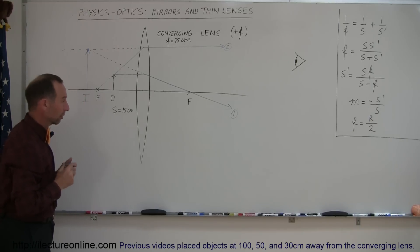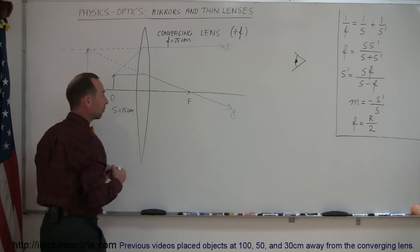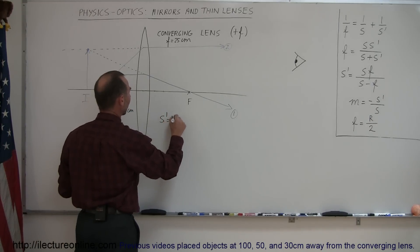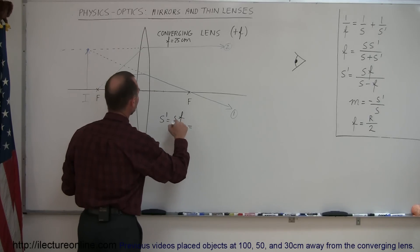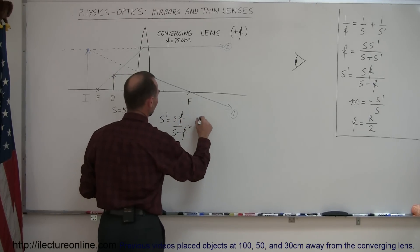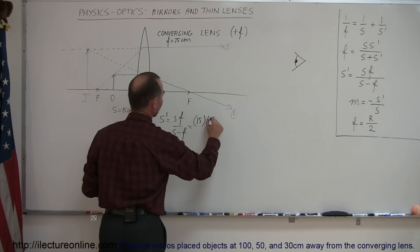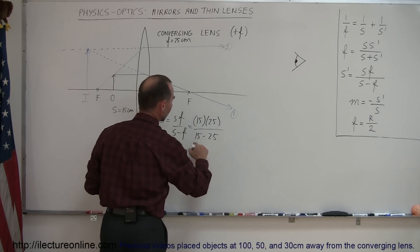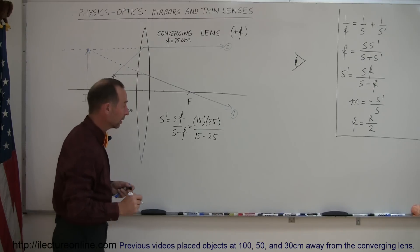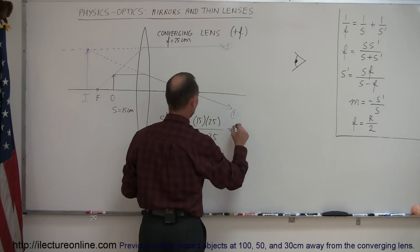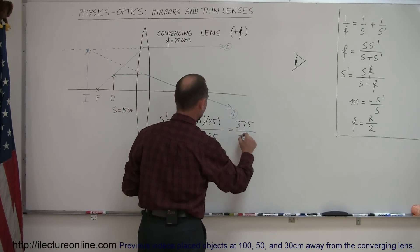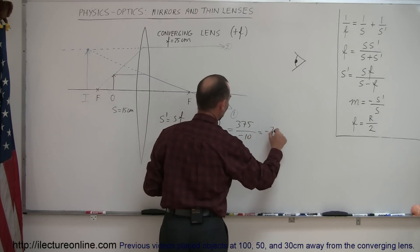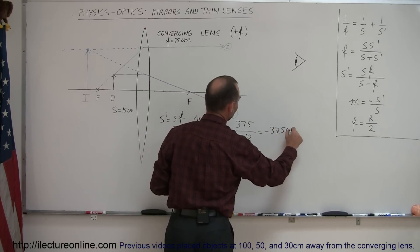Let's see how that works out for us when we use our equations. So S' is equal to SF over S minus F. And S is the object distance, which is 15 centimeters. The focal length, 25 centimeters. There we get 15 minus 25. Notice that the denominator is going to be a negative quantity. So this is equal to 375 divided by a negative 10, which is a negative 37.5 centimeters.